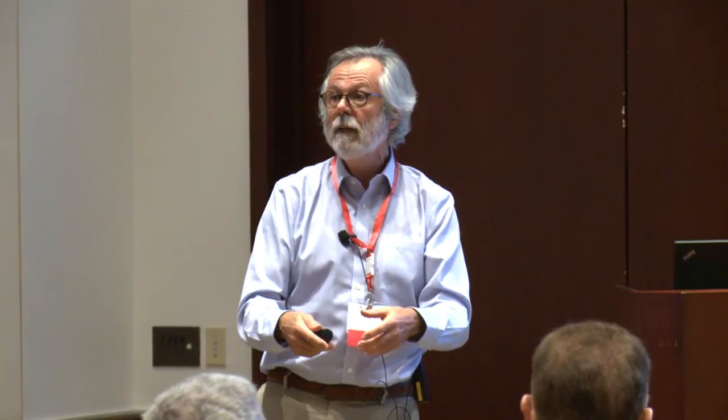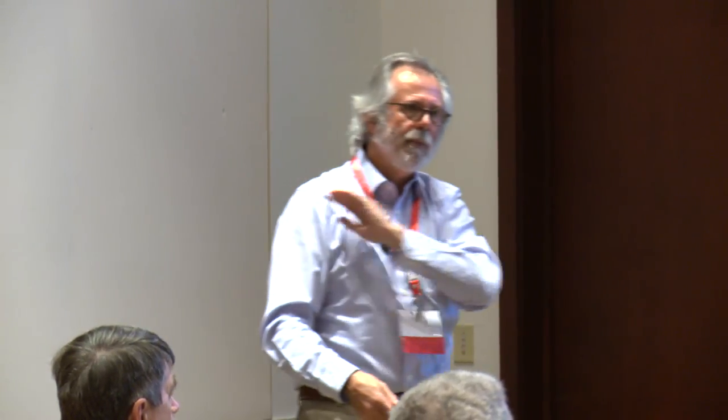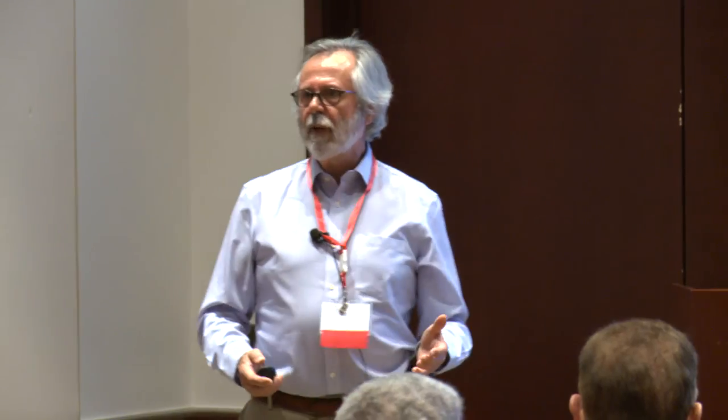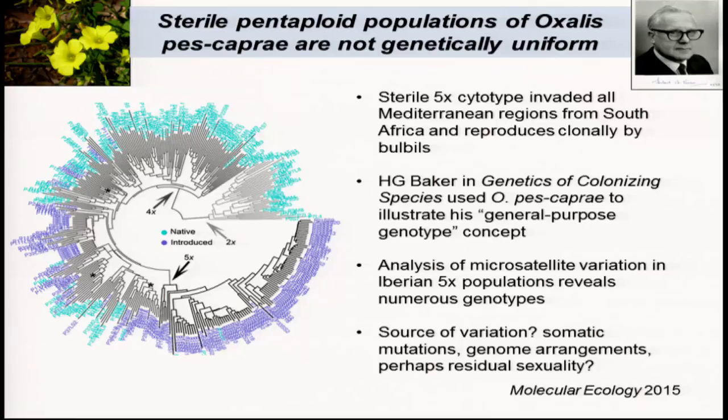Baker envisioned Oxalis pes-caprae as a single genotype that had colonized the world from its native South Africa — occurring in Chile, California, the Mediterranean, and Australia. However, we've recently analyzed genetic variation in this clone and found that it's actually not a single clone — there are lots of clones and quite a lot of genetic variability. The question is where does this genetic variability come from? I suggest that one possibility is that somatic mutations have played a role in generating this diversity.